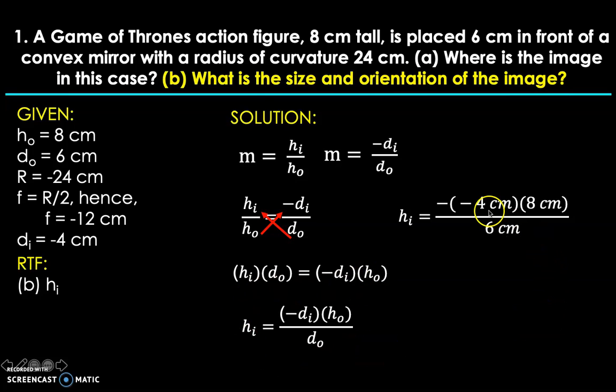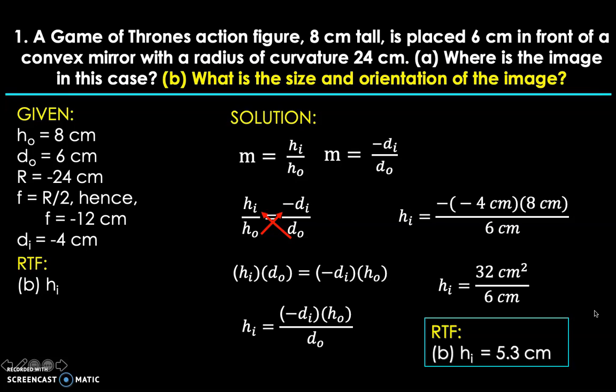For the substitution, d_i is negative 4 centimeters. But take note that in the equation, there's also another negative sign, so that will be written outside the parentheses. Then h_o is 8 centimeters and d_o is 6 centimeters. Simplifying the expression, we have negative times negative equals positive, 4 times 8 equals 32, so it's 32 over 6. That gives us 5.3 centimeters as the image height.